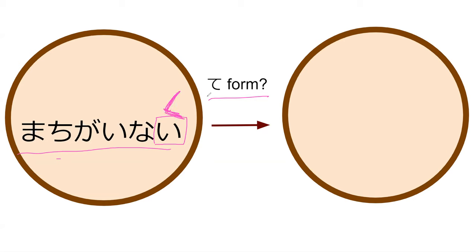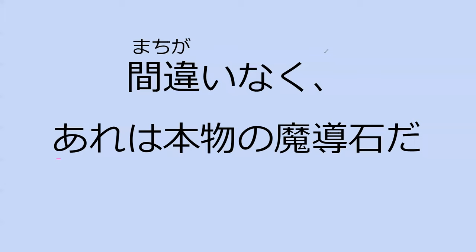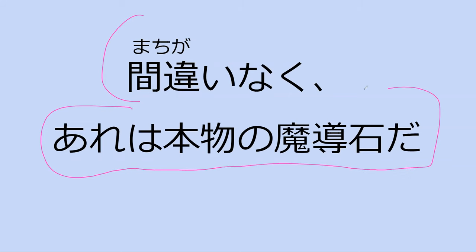The te is often dropped. So if I said 'machigai-naku, are wa honmono no maho seki da,' that means 'that is a real magical stone — no doubt about it, 100% correct.' Just saying 'this statement is correct, there's no doubt about it.' Let's go read our line from the book.